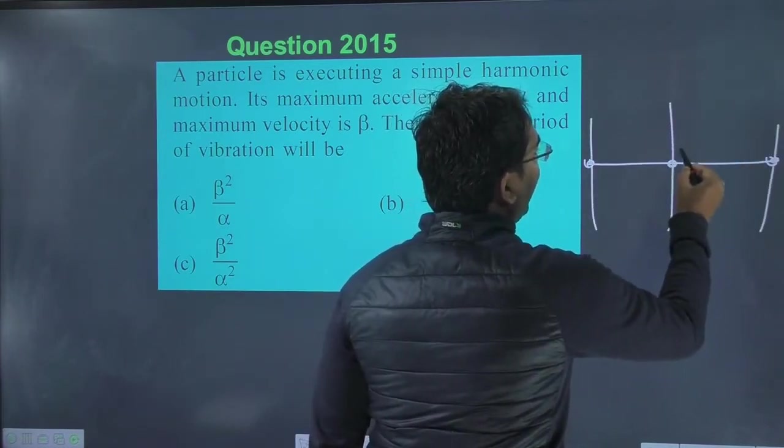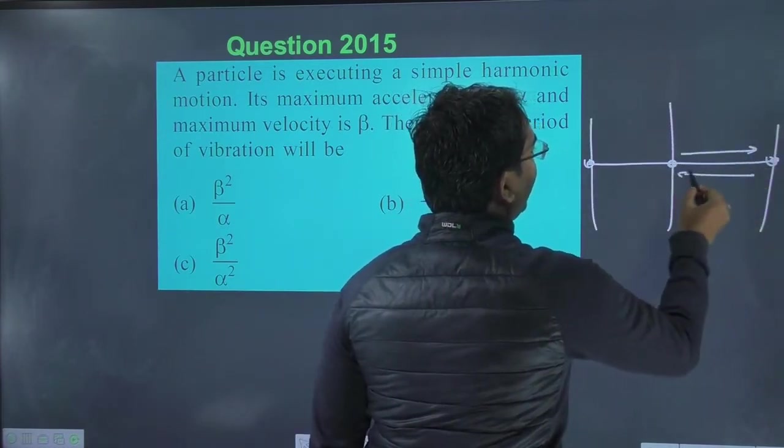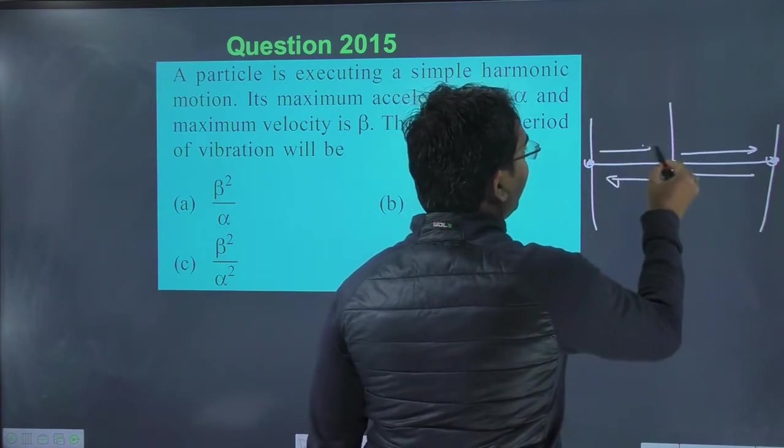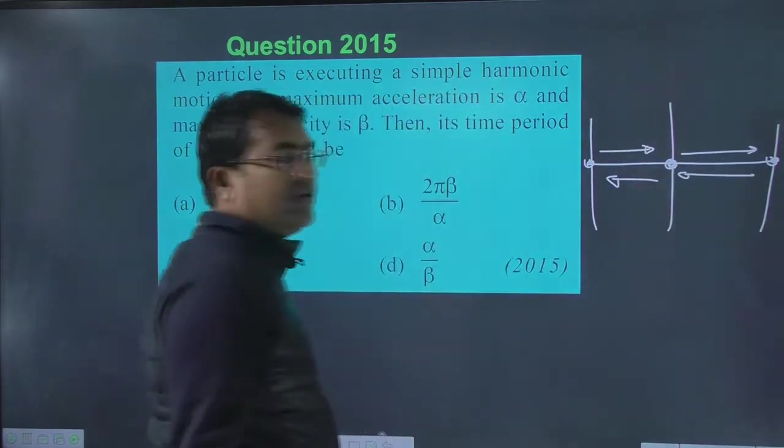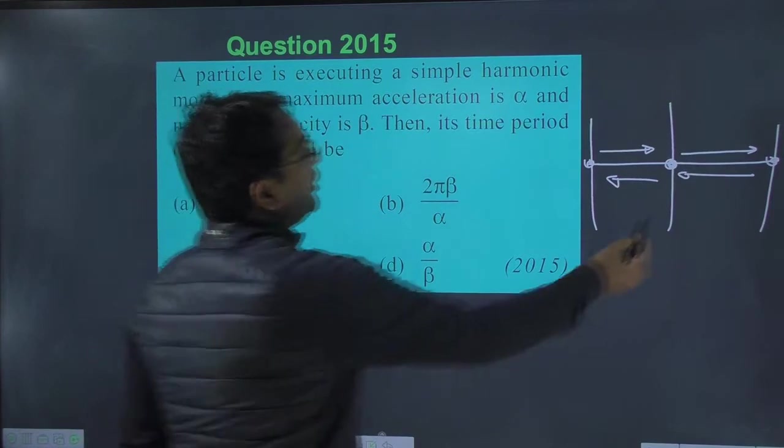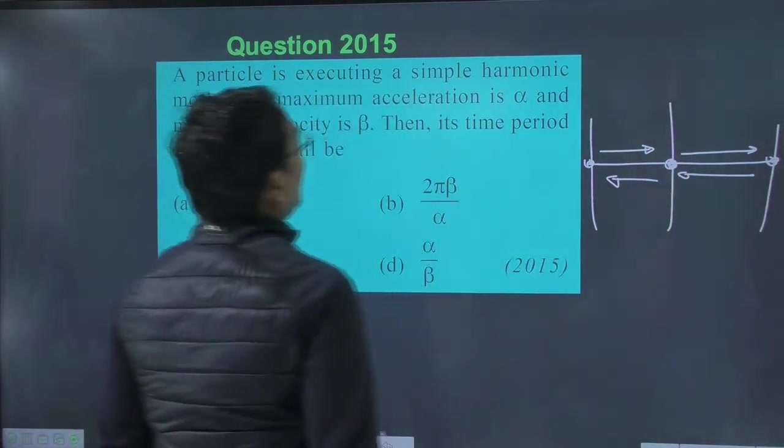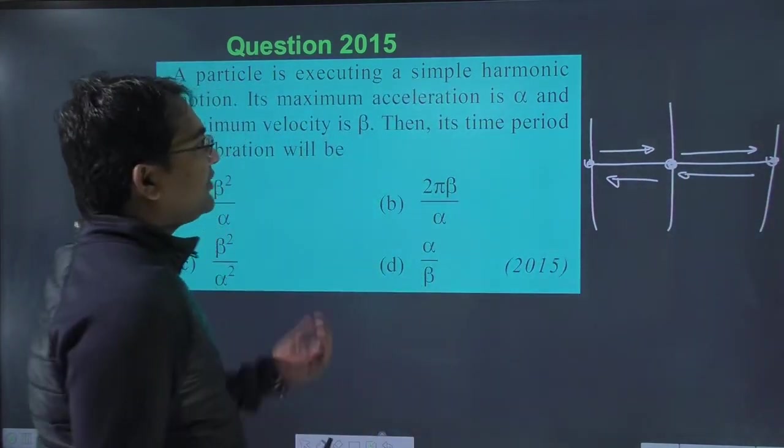Yeh mean position hai. Yahan se particle jayega, aayega. Idhar rok nahi paayega. Idhar jayega. Phir wapas aayega. Ek oscillation poora ho jayega. Yeh extreme position hai. Aur yeh mean position hai. Ab kehta hai, maximum acceleration alpha hai.